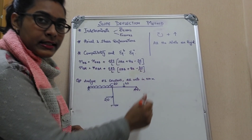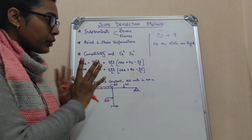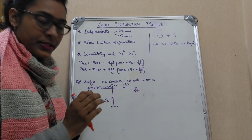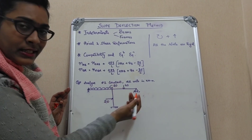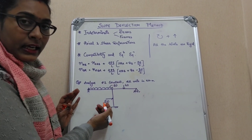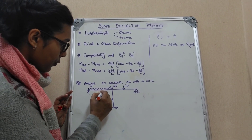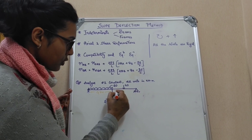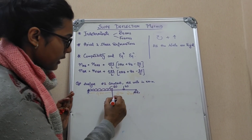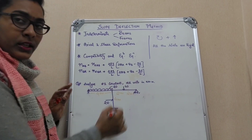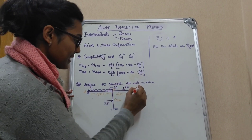We will be analyzing this portal frame where EI is given as constant and all units are in kilonewton and meter. The dimensions are: AB is 20, the load is 40, and one side is 20 kN. The lengths are 4 meters, 4 meters, and 4 meters. The joints are labeled A, B, C, and D.